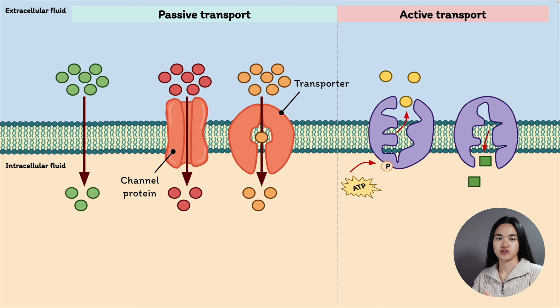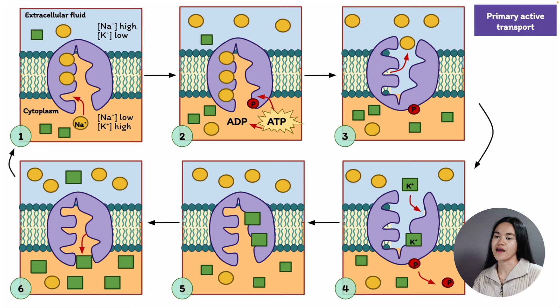There are two ways that energy can be coupled to transporters: primary active transport and secondary active transport. Primary active transport is driven directly by ATP, whereas secondary active transport is driven by an electrochemical gradient across a membrane.